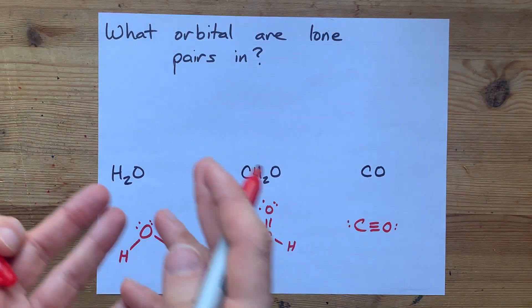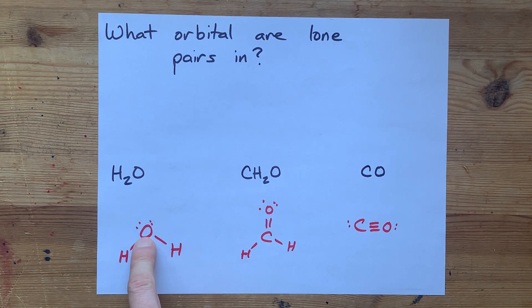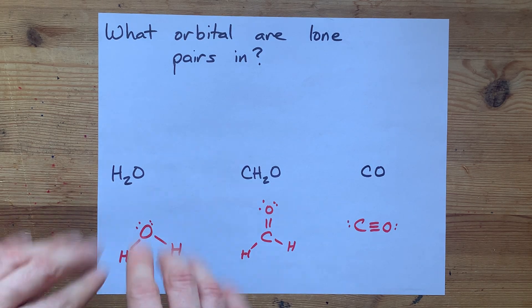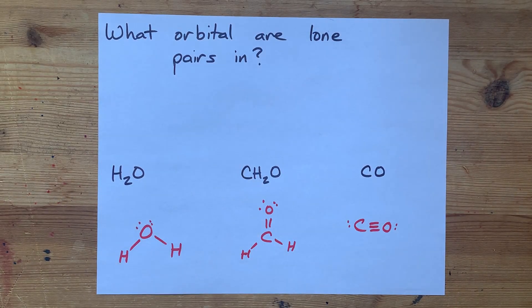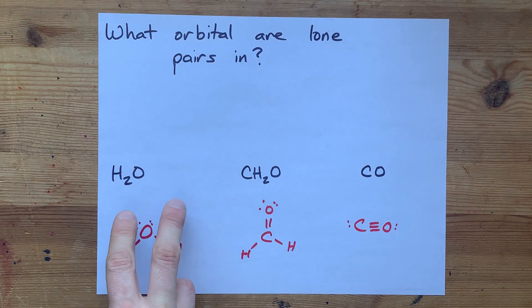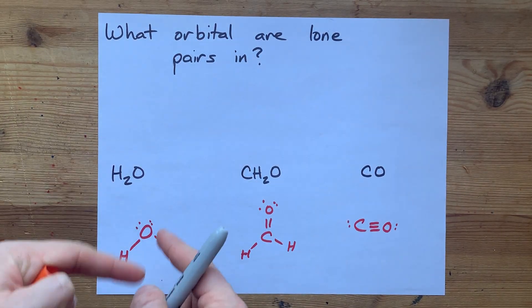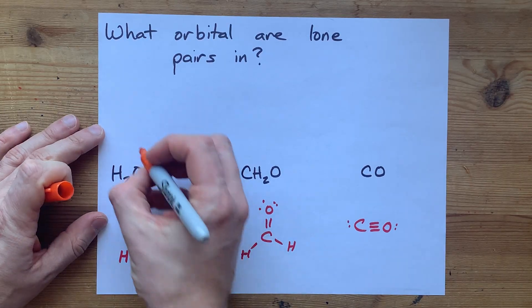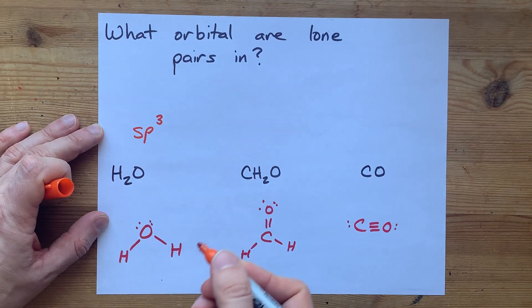that's the type of orbital that the lone pair is going to be found in. Here is water. That oxygen has four things around it, two sigma bonds and two lone pairs. In order to accommodate all four of those things in a tetrahedral-ish arrangement, you're going to have sp3 hybridization.